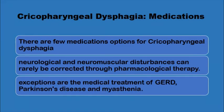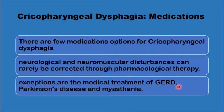Several medications were tried in the treatment of cricopharyngeal dysfunction patients with very little success. Sedatives, muscle relaxants, and gastrointestinal motility medications have all failed to show real improvement. The exceptions are treatment of reflux with proton pump inhibitors and antacids, and in cases of cricopharyngeal dysfunction due to myasthenia gravis or Parkinson's disease, where medications can be of some help.